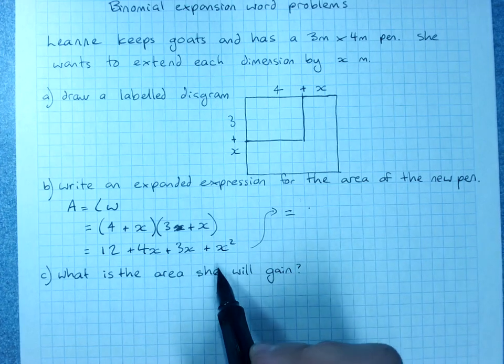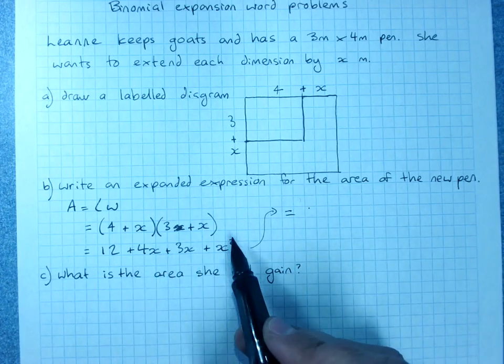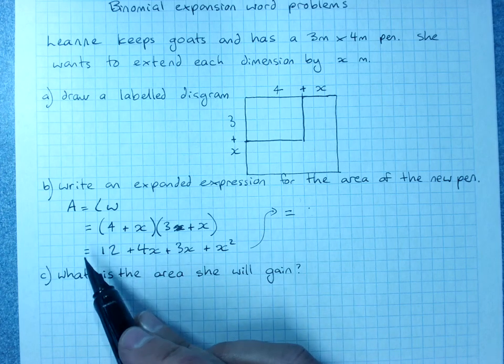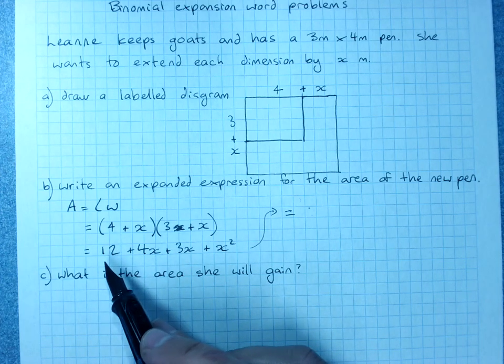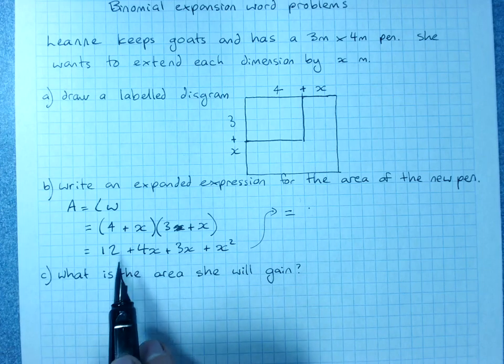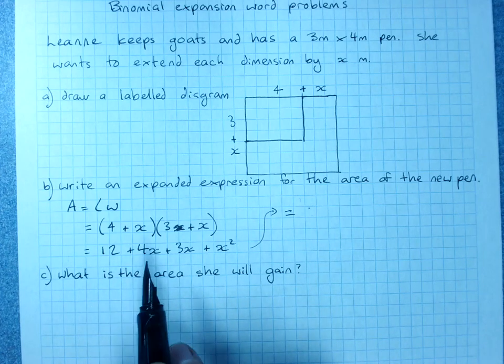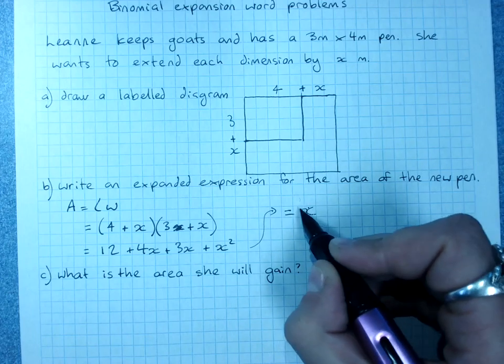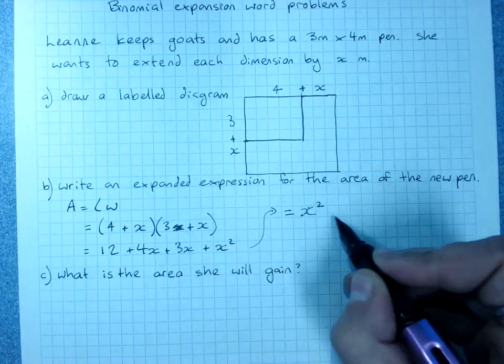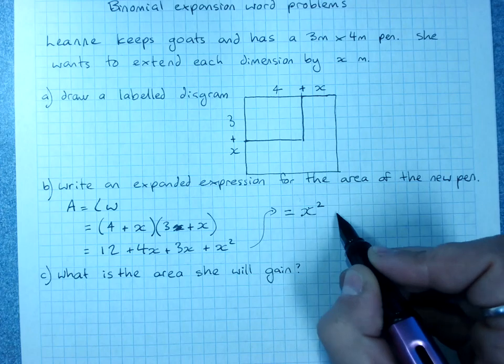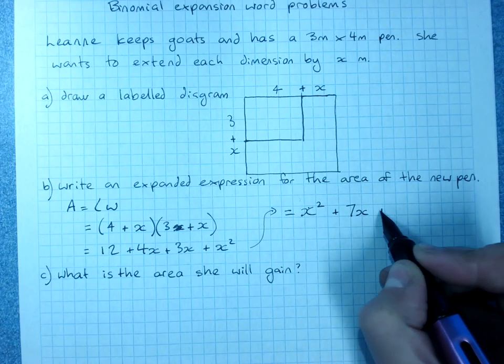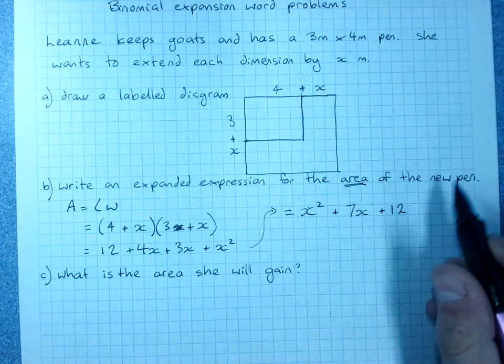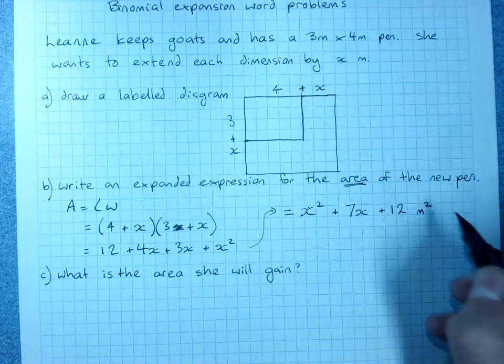now you would normally arrange it so your x squared comes first and your x comes second and your constant without a pronumeral comes last. But it would not be incorrect if you wrote twelve plus 7x plus x squared. It's better to go in decreasing order of powers of x. x squared plus 7x plus the constant of twelve and this is area so this is in meters squared.